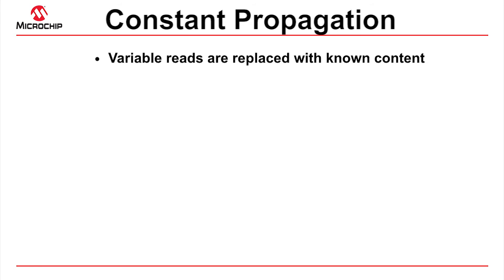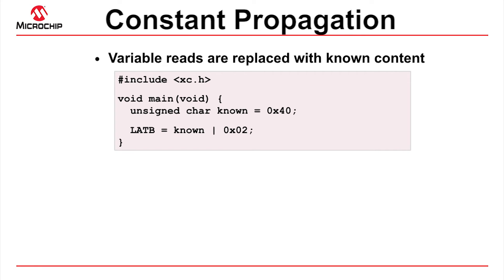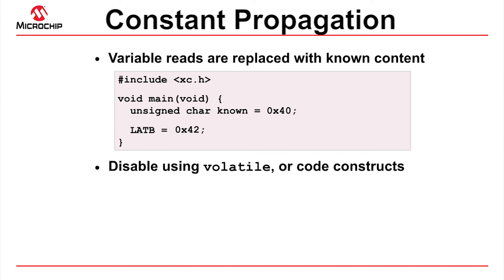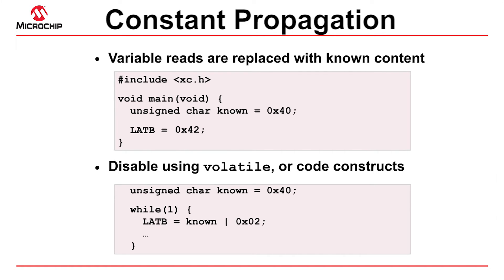Tracking the content of variables is another optimization that can cause confusion. If a variable is not modified before it is read, its known value can be used directly without having to read the variable from memory. In the example shown, the compiler would replace the variable 'known' with its assigned value, 0x40, then fold the resulting expression so that LATB is directly assigned the constant value 0x42. Use a lower operating mode or make the variable volatile to disable this optimization. Note that a simple loop is enough to prevent the compiler from making this change.